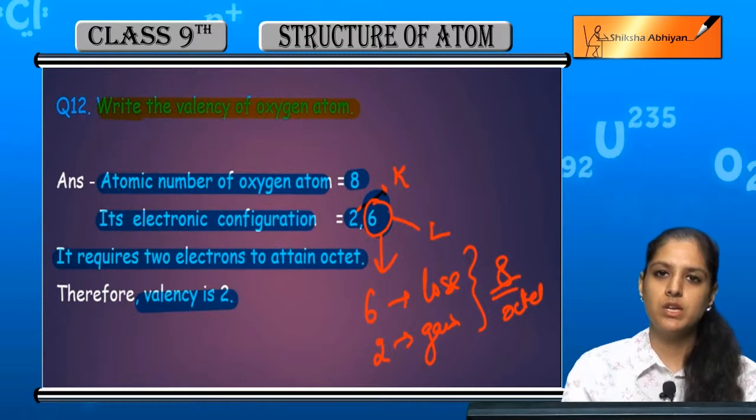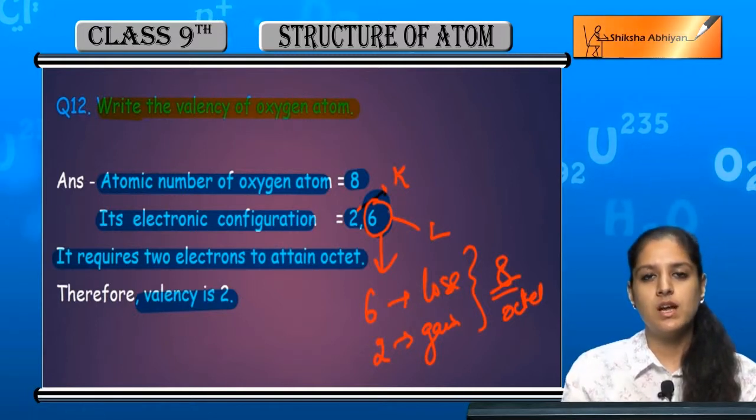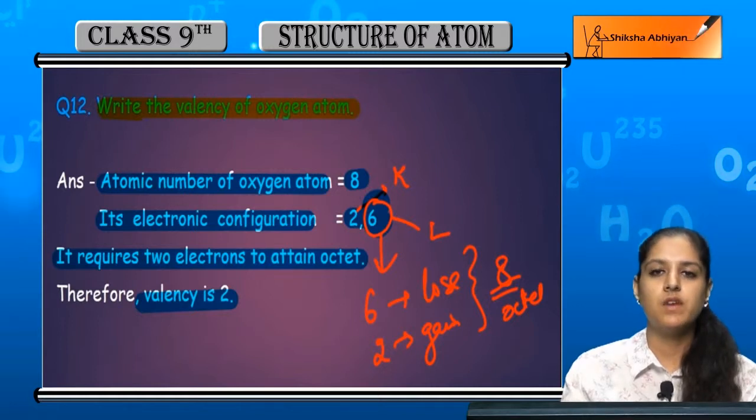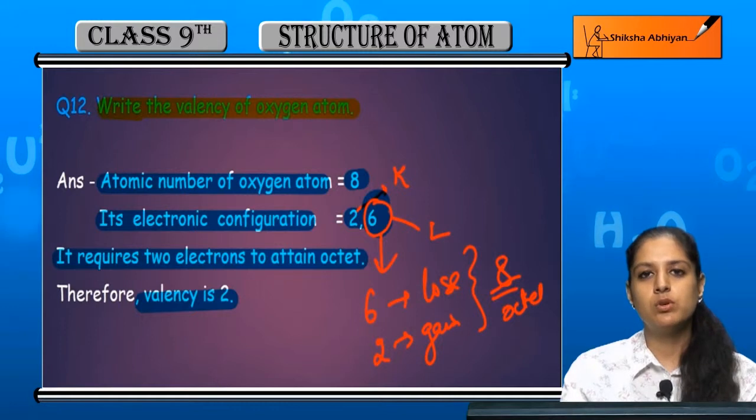Any atom that gives or takes electrons to form an octet, that number is its valency. In this case, the oxygen atom will gain 2 electrons, so its valency is 2.